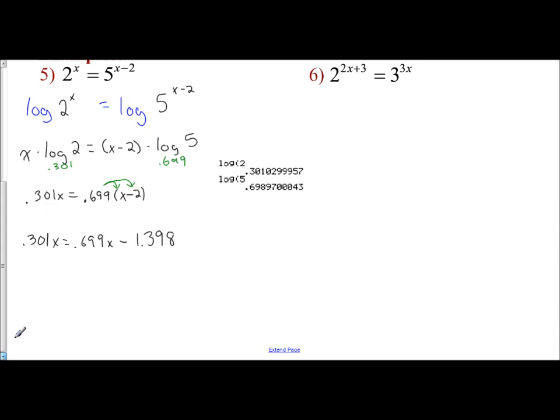So to solve, I'm going to get my variables on one side. So I'm going to subtract my 0.699. So I have 0.301 minus 0.699, and that's going to give me negative 0.398x equals negative 1.398. And so to solve, I divide by my coefficient. So I have negative 1.398 divided by negative 0.398, which gives me 3.513.